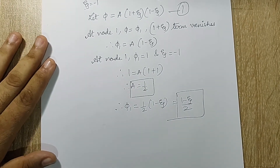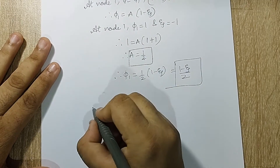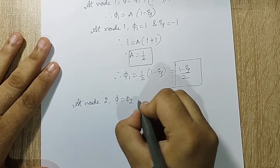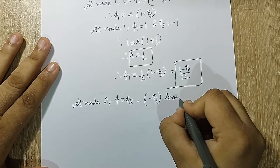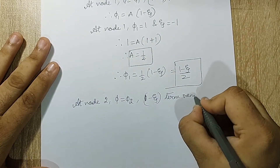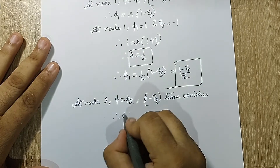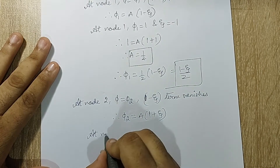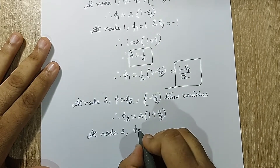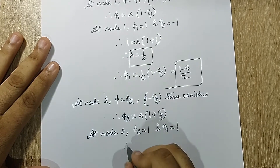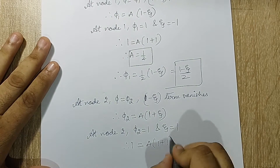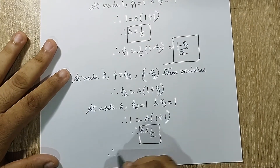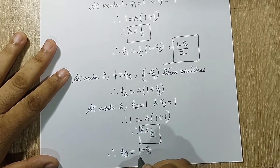At node 2, φ = φ₂ and the term (1 - ζ) vanishes, so φ₂ = a·(1 + ζ). At node 2, φ₂ = 1 and ζ = +1, therefore 1 = a·(1 + 1) = 2a, so a = 1/2. Substituting gives φ₂ = (1 + ζ)/2 — the same answer obtained by the previous method.